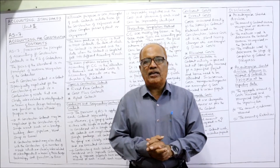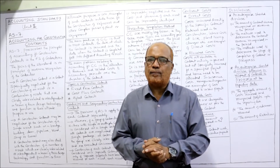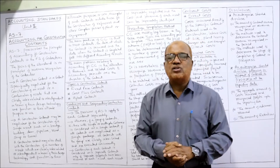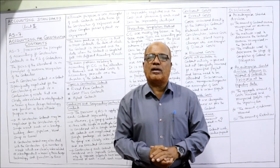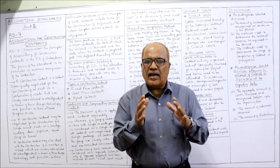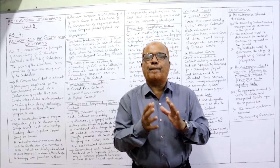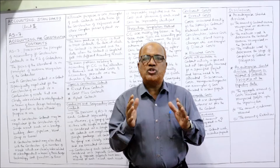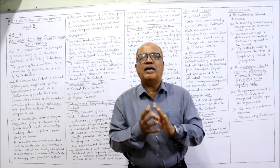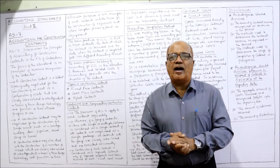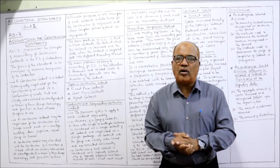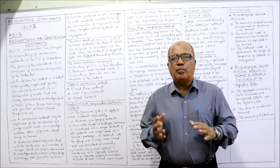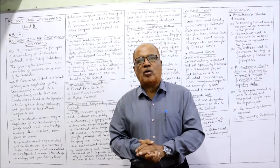The next accounting standard is AS 7, which deals with accounting for construction contracts. In this video, I am going to explain the provisions given by AS 7 regarding accounting for construction contracts.